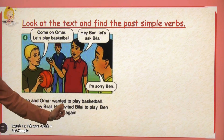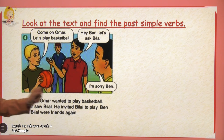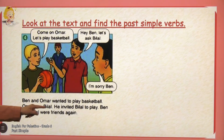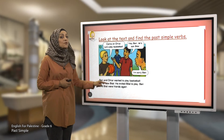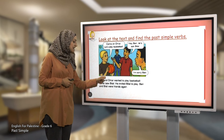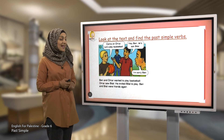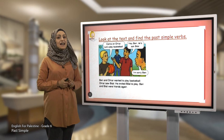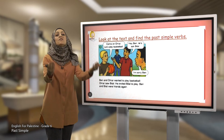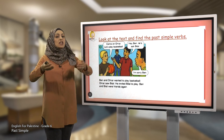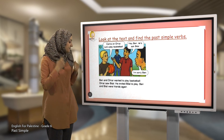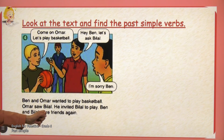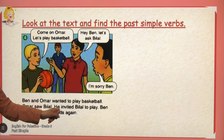Let's look at the past simple verbs — can you please find them? Yes, we have 'wanted.' What else? We have 'saw' — it's the past form of 'see.' And we also have 'invited' — it's the past form of the verb 'invite.' And the last one is 'were' — Bilal were friends. 'Were' is the past form of 'are.'